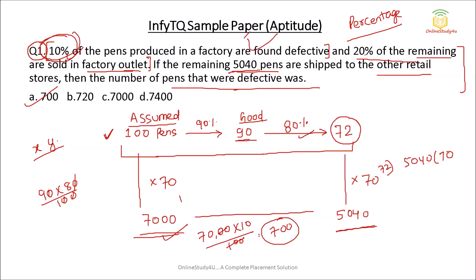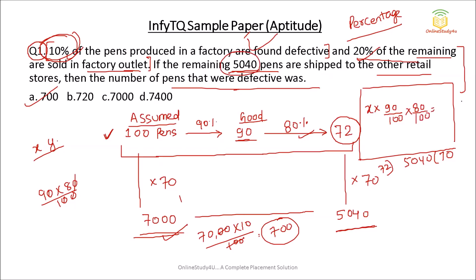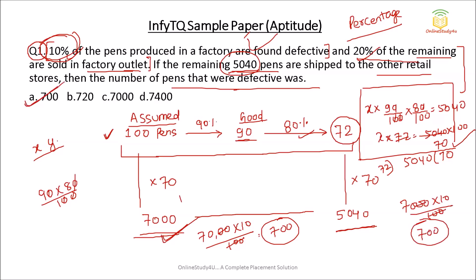You can also solve this using X. Suppose total number of pens is X. 10% is defective, so 90% is good. Then 20% is sold in the factory outlet, so 80% remains — and that equals 5040. So 72% of X equals 5040 into 100, giving X equal to 7000. And 10% of 7000 equals 700. Both methods give the same answer.